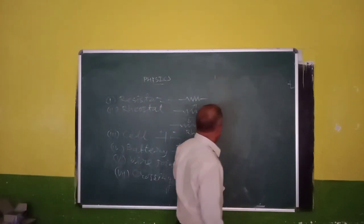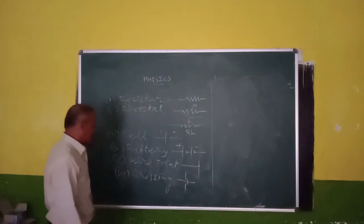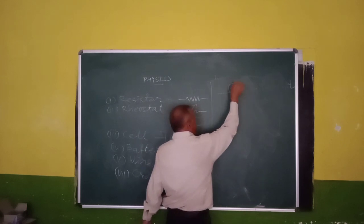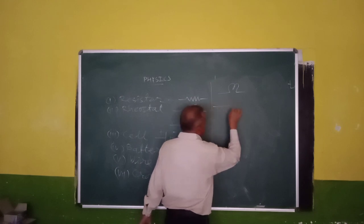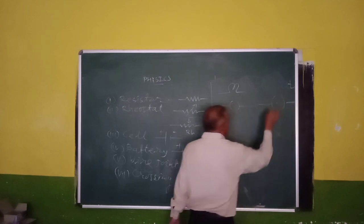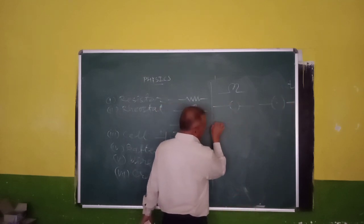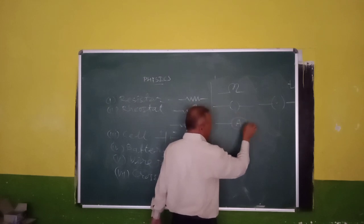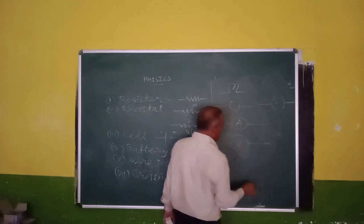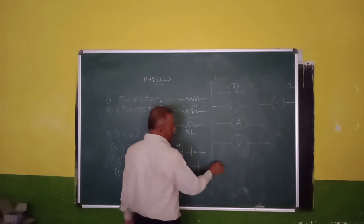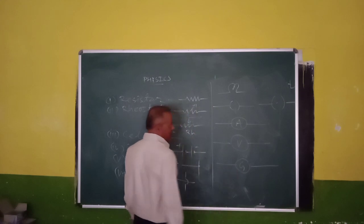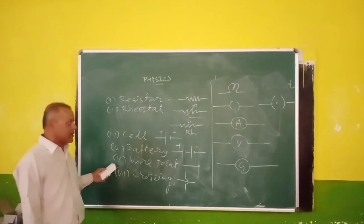The next symbols include the open switch, drawn with open terminals, and the closed switch. After that, there is the ammeter — a device used to measure electric current — and the voltmeter — a device used to measure potential difference. Finally, the galvanometer is used to detect electric current in a circuit. These are the basic symbols used in electric circuits.